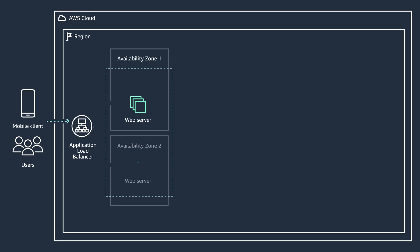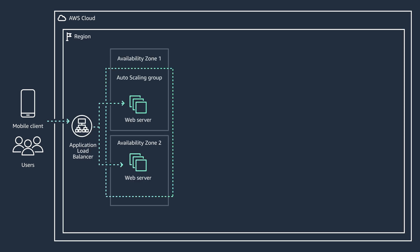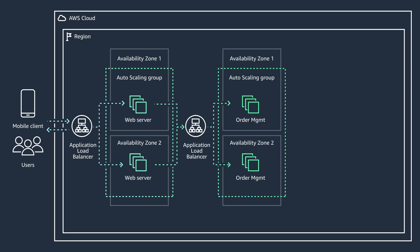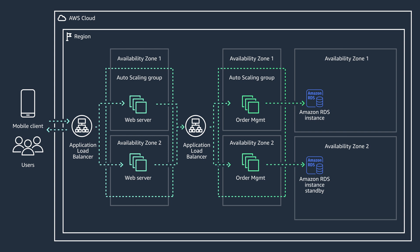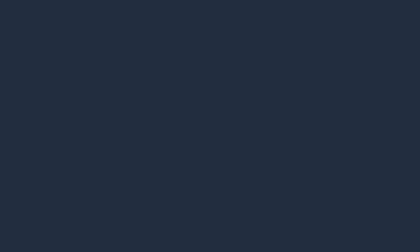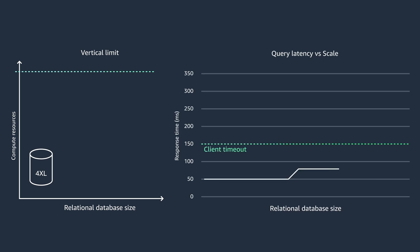Let's look at a similar customer use case. Here is an example of a typical e-commerce application with a three-tier architecture. The architecture includes a web tier that interacts with an order management application and back-end databases to complete the order lifecycle. As e-commerce companies acquire new users, database size and number of database requests per second increase for their order database. As the number of incoming orders increase, database size grows along with the number of database requests, increasing the average response time until it reaches an inflection point when the response time goes beyond the client timeout and client requests start to fail.